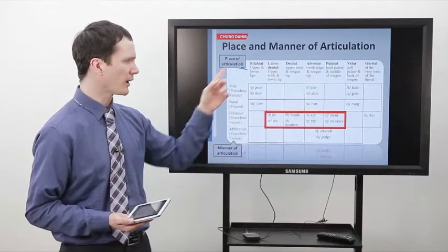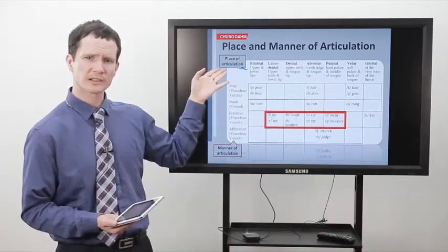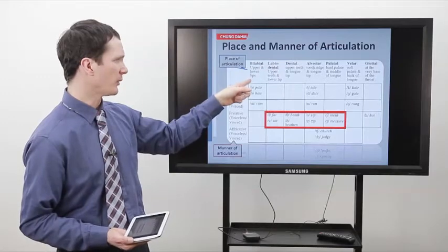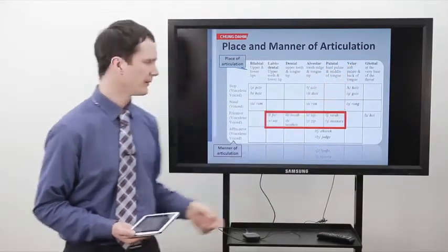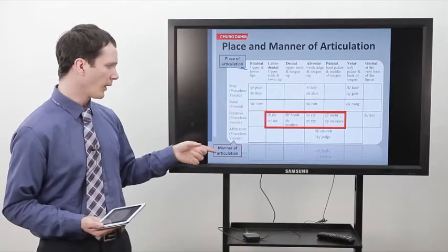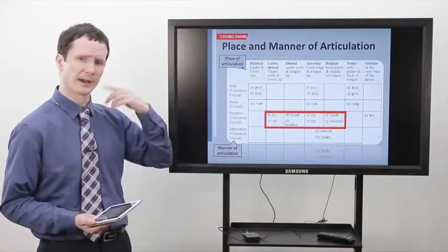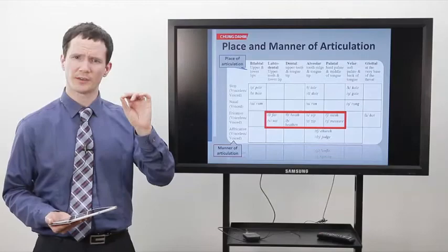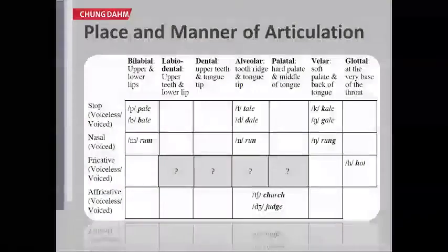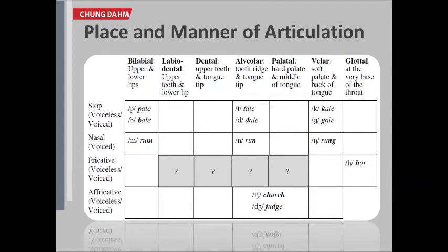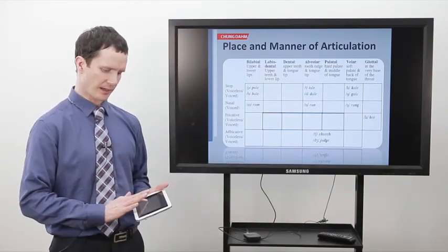As we think about the consonants of English, the most important things to keep in mind are: what's the place of articulation — where in the mouth is this happening? Is it with the lips, the teeth, the hard palate, or the soft palate? And then the second most important thing is, what are we doing to the air? Are we stopping the air, putting the air out our nose, or causing friction? That's the manner of articulation. Now that you've had a moment to think about which sounds go into these boxes, here is the answer.